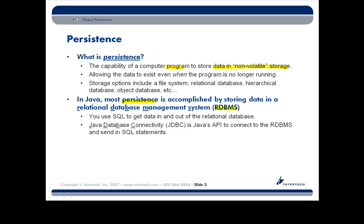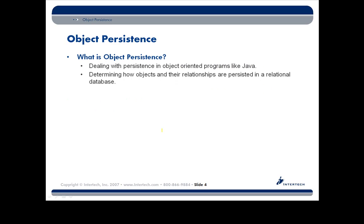We typically use SQL to get data in and out of that relational database. And of course, also in Java, we use JDBC as our main Java API to connect to that relational database system and send and receive data with SQL statements. Now, adding the term "object" in front of persistence — what exactly does that mean? That's dealing with getting objects and their relationships with other objects persisted in and out of that database.